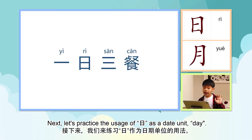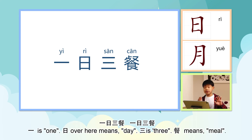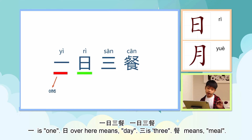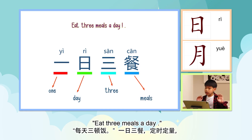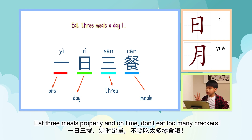Let's practice the usage of 日 as a day unit. 一日三餐 — 一 is one, 日 over here means day, 三 is three, 餐 means meal. Eat three meals a day. 每天吃三顿饭。 一日三餐，定时定量 — eat three meals properly and on time. Don't skip meals!